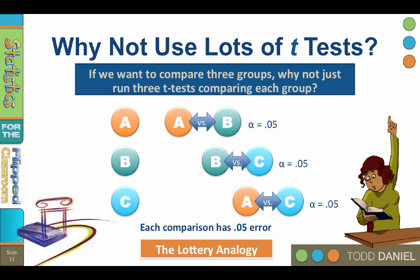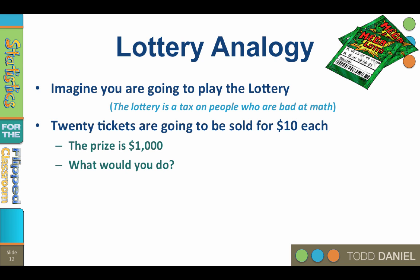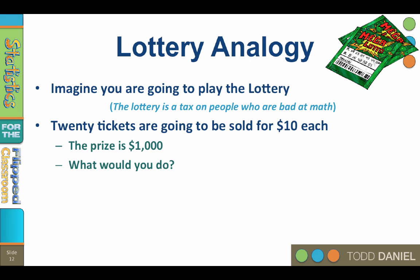So what's the problem? Well, let's examine this using the analogy of a lottery. Imagine that you were going to play the lottery. Normally I would not recommend this because the lottery is a tax on people who are bad at math and don't understand probability. But this is a special lottery — only 20 tickets are going to be sold for $10 each, and the prize is $1,000. Now this is a good lottery to play. If you were smart, you would buy all 20 tickets. In this analogy, every lottery ticket has a 1 in 20 chance, a 5% chance, of winning. The probability of any ticket winning is P = .05. But even though any one ticket has a 5% chance of winning, if you hold all of them, you have a 100% chance of winning.